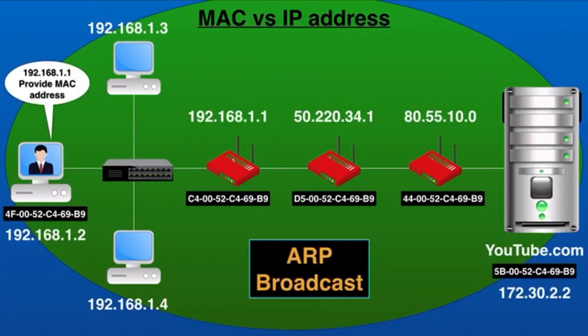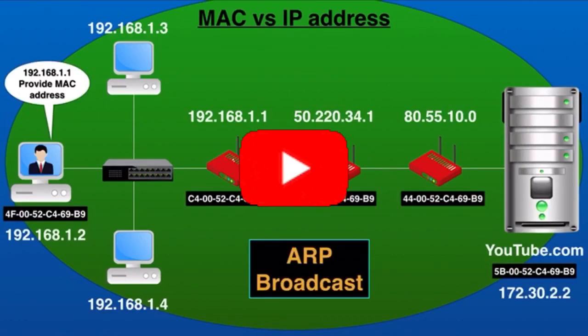In a nutshell, MAC address is used at each stop along the way to the final destination, while IP address is used to locate and reach that final destination. If you want to know more about default gateway and ARP protocol, check the links in the description. Thanks for watching — please don't forget to hit the subscribe button.